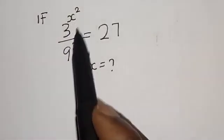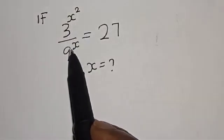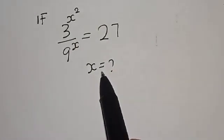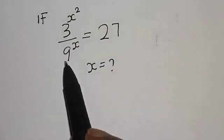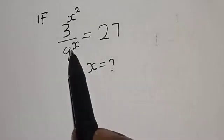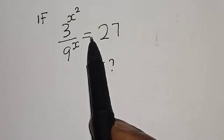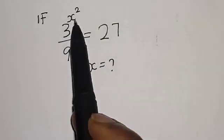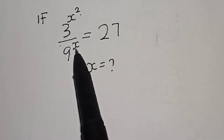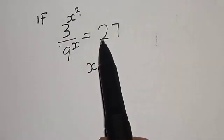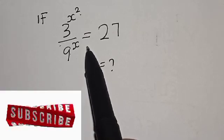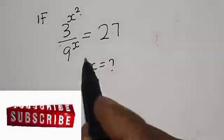If 3 raised to power s squared divided by 9 raised to power s is equal to 27, what is the value of s? Welcome to Math Gist. In this class we want to find the value of s from this exponential equation: 3 raised to power s squared divided by 9 raised to power s is equal to 27. Please like, share, and subscribe.